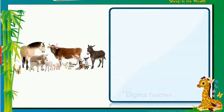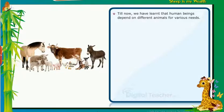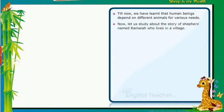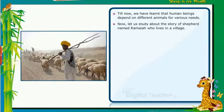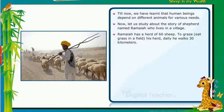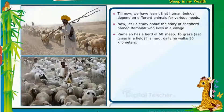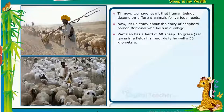Now we will learn about how sheep are useful as a resource to a person. We have learned that human beings depend on different animals for various needs. Now let us study the story of a shepherd named Ramaya who lives in a village. Ramaya has a herd of 60 sheep. To graze and eat grass in a field, his herd walks 30 kilometers daily.